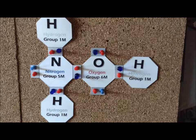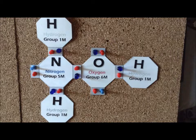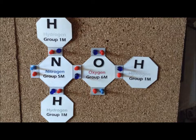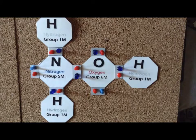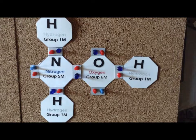Hydroxylamine is a useful reducing agent in organic synthesis. It has the chemical formula NH₂OH. We can think of it as ammonia where we've replaced one of the hydrogens with a hydroxyl group. Nitrogen contributes 5 valence electrons, oxygen contributes 6, giving a total of 11. Each of the three hydrogen atoms contributes 1 valence electron, for an additional 3, giving us a total of 14 electrons for the entire molecule.